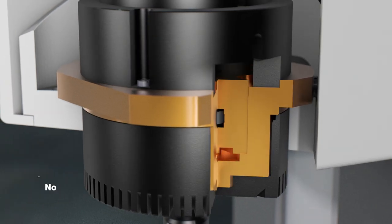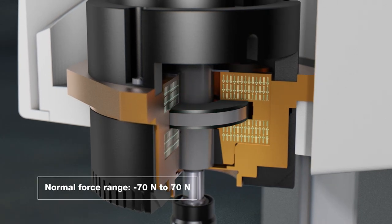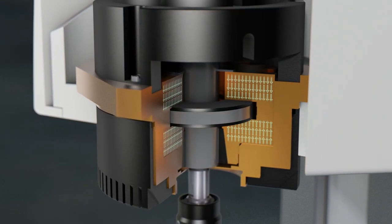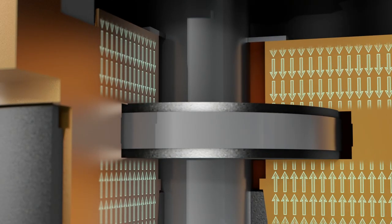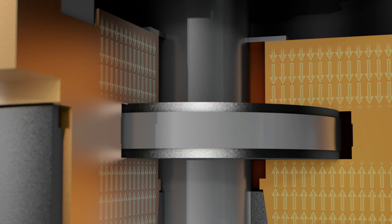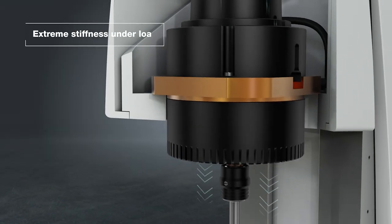The non-contacting 360-degree capacitive normal force sensor is fully integrated in the air bearing. Featuring an air gap of just a few micrometers, the EC motor's air bearing shows extreme stiffness even under very high load.